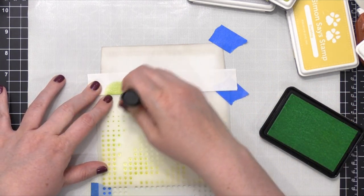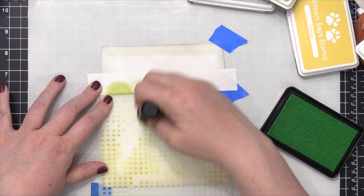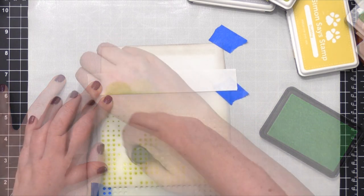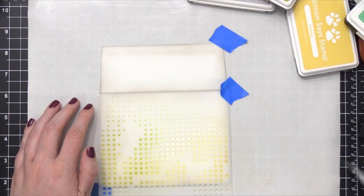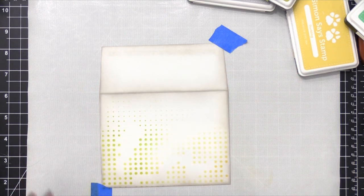So this stencil in particular leaves a lot of white space behind. That's why it's a great stencil for really quiet backgrounds or things that you want to be a little bit less busy, which is perfect for an envelope like this so I can put the address on top.